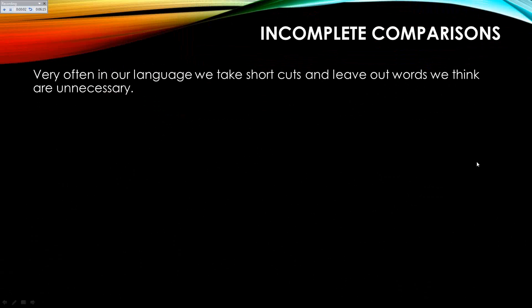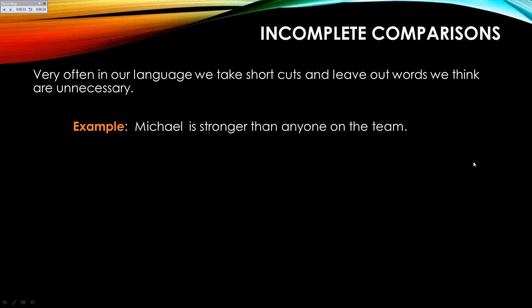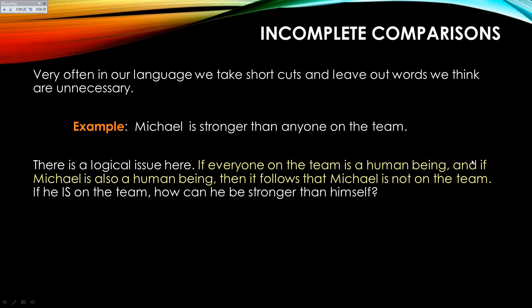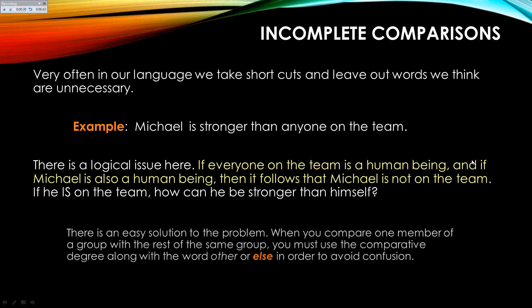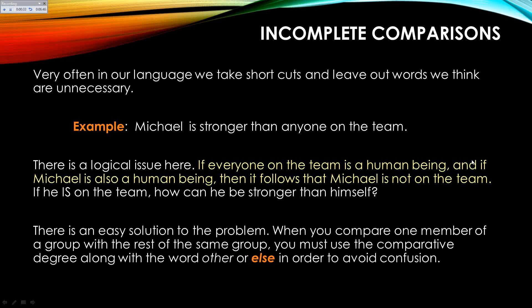Then we have something called incomplete comparisons. Sometimes we take shortcuts and leave out words we think aren't necessary. Here's the example: Michael is stronger than anyone on the team. Well, Michael must not be on the team, because if he is, how could he be stronger than anyone? He constitutes part of 'anyone' — it means he'd be stronger than himself, which is not possible. We can fix this by using the word else: Michael is stronger than anyone else on the team. Then we know Michael is part of 'anyone,' but when we say 'anyone else,' we're excluding Michael.